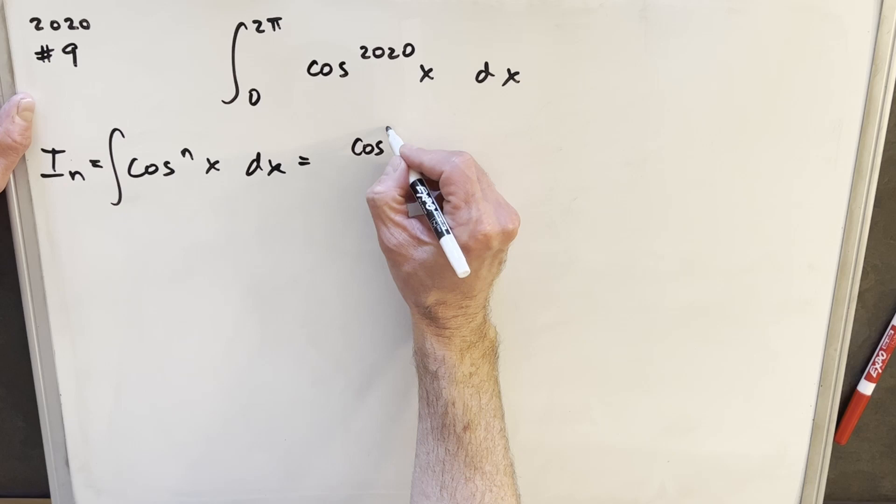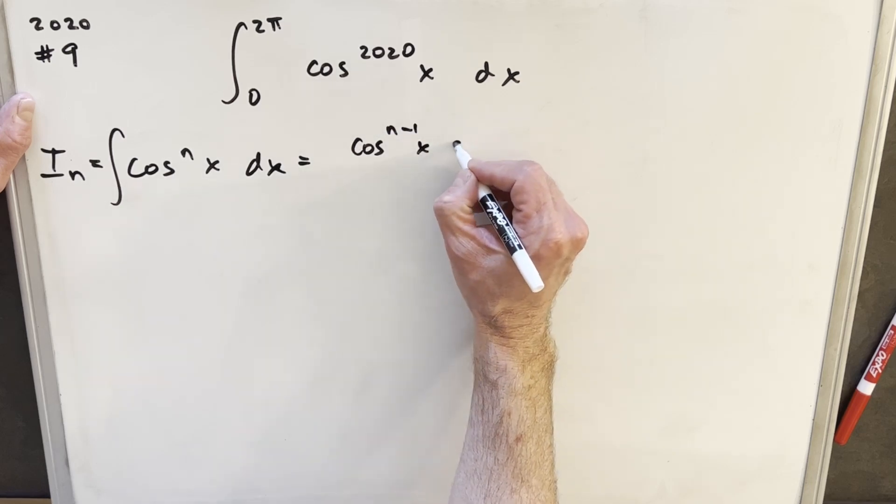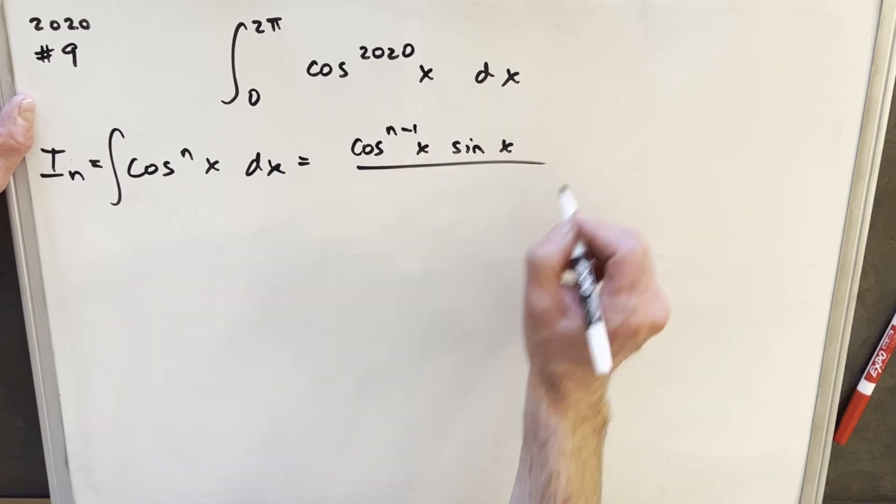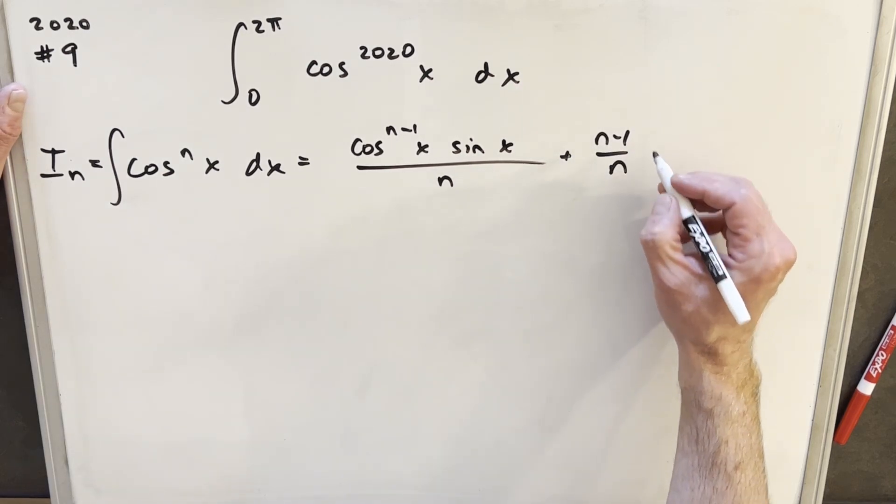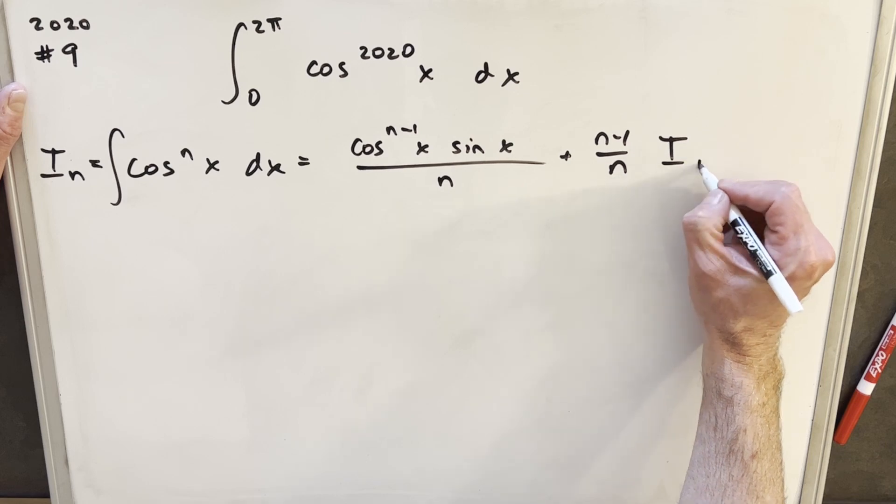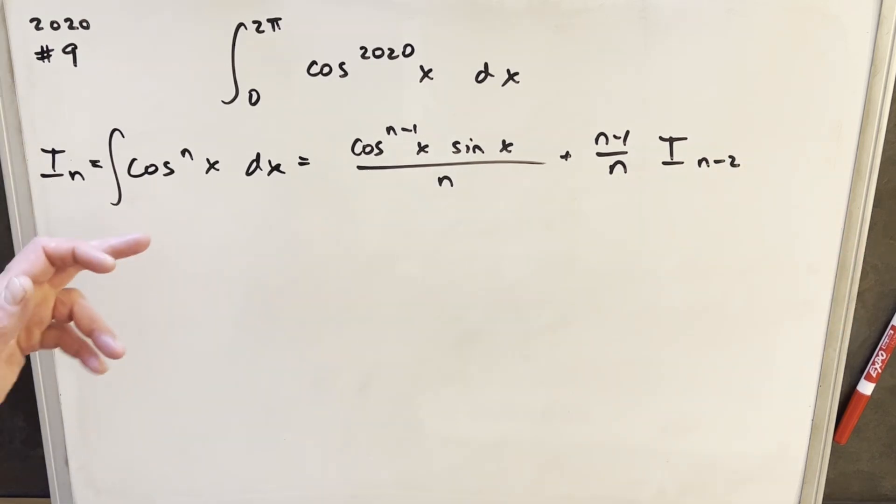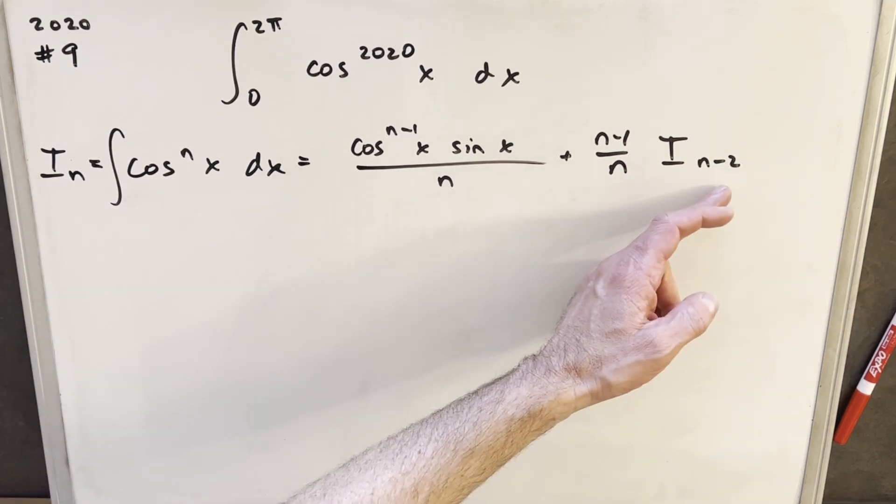The formula for this will be cosine n minus 1x sine x over n plus n minus 1 over n i sub n minus 2. So this is a nice formula but all it does is reduce the power by 2, right?